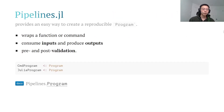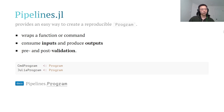First, we'll talk about Pipelines. Pipelines has a type called Program — it's an abstract type, a wrapper of a function or command. It consumes input and produces output, and it has many pre- and post-validation steps you can define. There are two subtypes: CommandProgram and JuliaProgram.